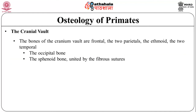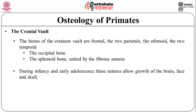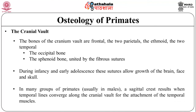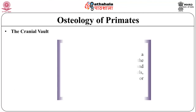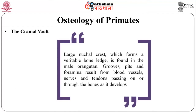Now let us discuss the cranial vault. The bones of the cranial vault are the frontal, the two parietals, the ethmoid, the two temporals, the occipital, and the sphenoid bone, united by fibrous sutures. During infancy and early adolescence, these sutures allow growth of the brain, face, and skull. In many groups of primates, usually in males, a sagittal crest results when temporal lines converge along the cranial vault for the attachment of the temporal muscles. A large nuchal crest, which forms a veritable bone ledge, is found in the male orangutan. Grooves, ridges, and foramina result from blood vessels, nerves, and tendons passing on or through the bones as they develop.